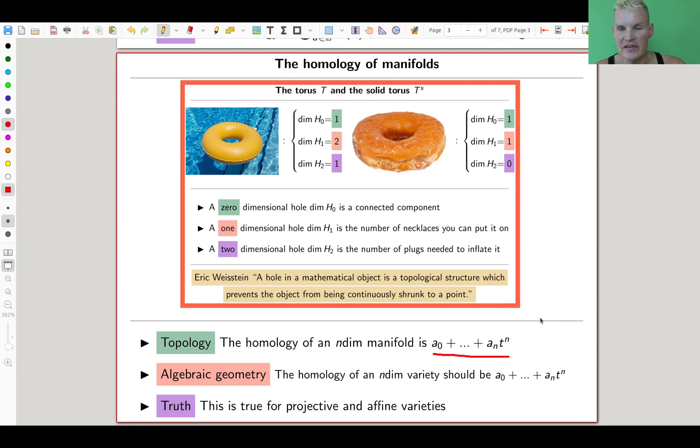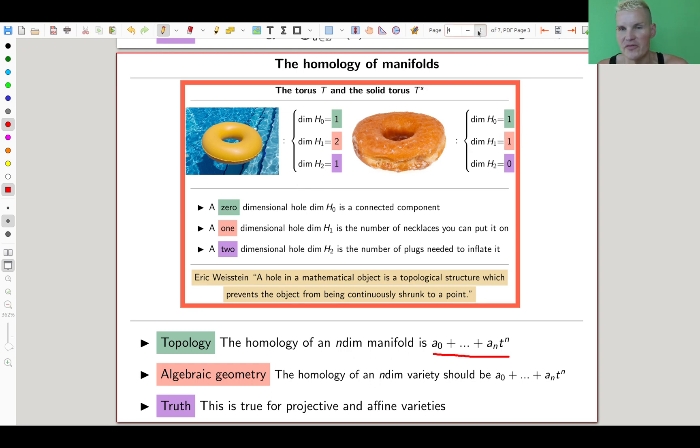The homology of an n-dimensional variety should also be concentrated in certain degrees, and it is, at least for large classes of varieties or the most interesting varieties. For projective affine varieties it's even more boring, but for projective varieties it's exactly what it is. Somehow projective varieties play the analog of manifolds, and that's exactly how it should be. The striking analogy between topology and algebraic geometry is: sphere to projective space, manifold to projective variety. This is the analogy you should keep in mind, and the homology is designed to be correct.